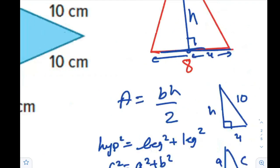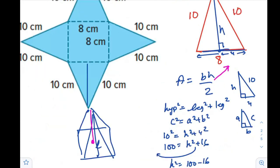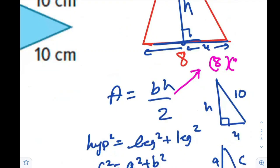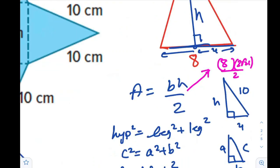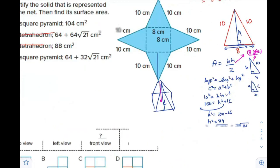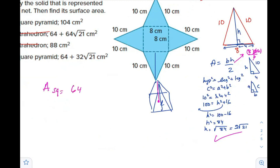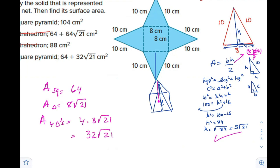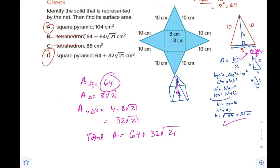Going back to the formula: the area of the triangle is base times height over 2, which is 8 times 2 radical 21 over 2. The 2 cancels, so it is 8 radical 21. The area of the square is 64. The area of 4 triangles will be 4 times 8 radical 21, which is 32 radical 21. So the total surface area is 64 plus 32 radical 21. And we have D as our final answer — don't convert to decimal.